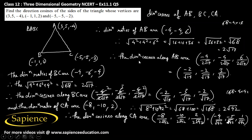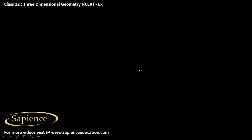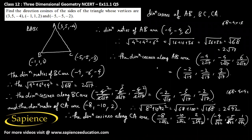Therefore, the direction cosines along side AB, BC, and CA are as found above. These are the final answers. Thank you.